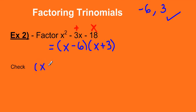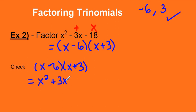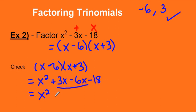If I were to check this, I'll expand using the FOIL rule. F: x times x is x squared. O: 3 times x is 3x. I: negative 6x. L: negative 6 times positive 3 is negative 18. Collecting those two middle terms: 3x minus 6x is negative 3x minus 18. Is that what I started with? Absolutely it is, so my factoring was done correctly.